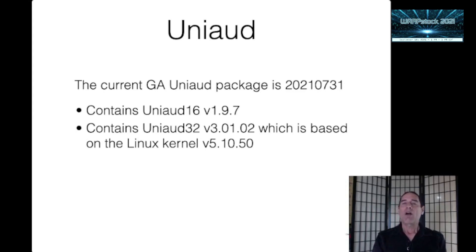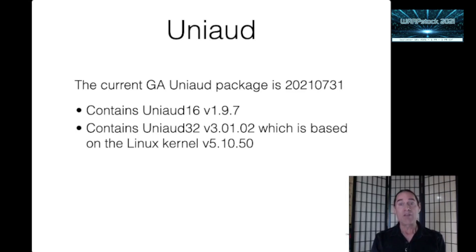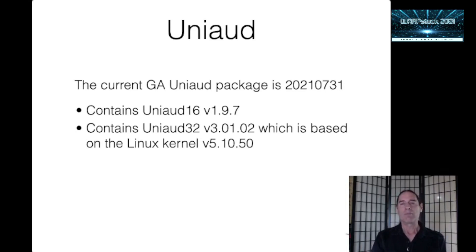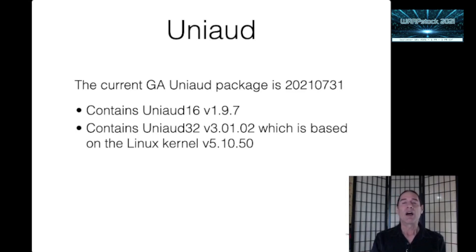There are also newer beta builds available on the netlabs UniAud track page and on the ArcaNoah UniAud wiki. All the new versions, including the GA version, seem to work on a much larger variety of systems than previous builds. There are still a few very minor issues, and details are on the ArcaNoah UniAud wiki if you want to look there.